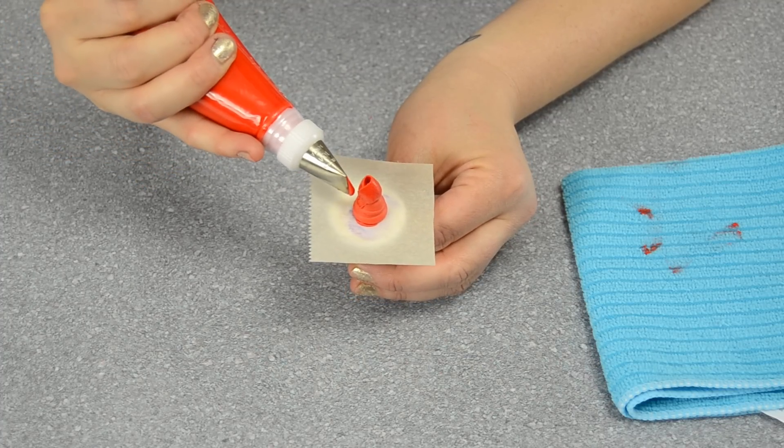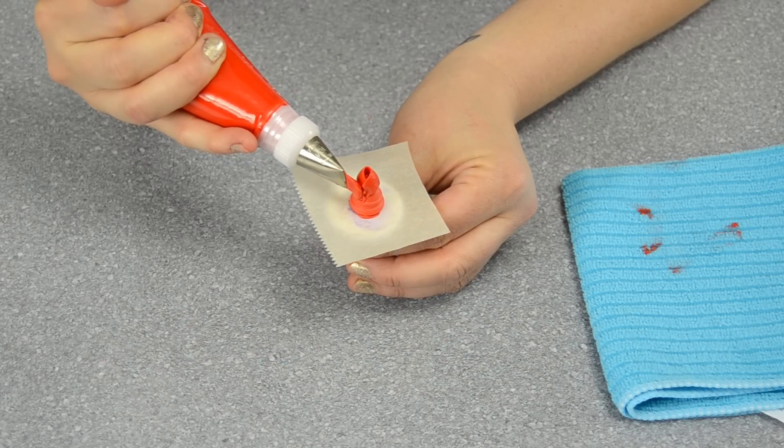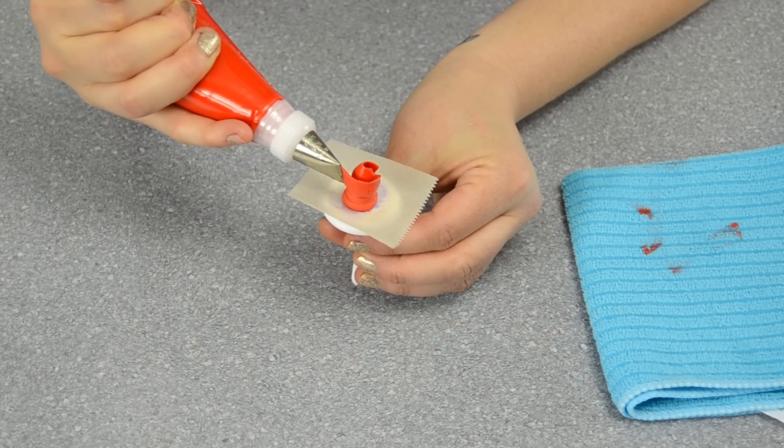So the second one, just going to go slightly down below and then start. Attach the icing, start pressure, turning the flower nail, coming back to the start and pressing down, squeezing it away.